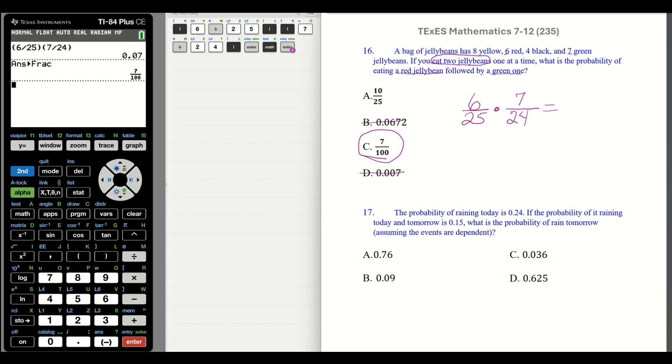Let's go to number 17. The probability of raining today is 24%. If the probability of it raining today and tomorrow is 15.24%, what is the probability of rain tomorrow assuming that the events are dependent? That is very important, because what they're saying is that we're going to multiply today and tomorrow. So we can set this up. And we know what today is. That's 24%. So we have today, 24, times tomorrow. We don't know what tomorrow is, so we have to write an X. Then both days together, they've given it to us. That's 15%.